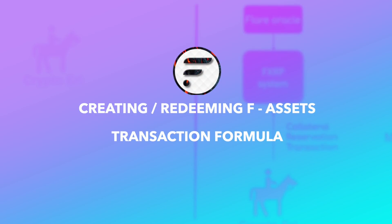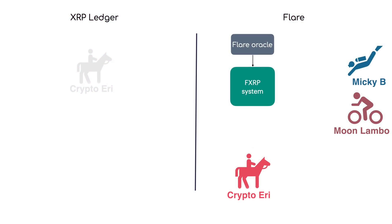Transaction formula. After completing the reservation transaction, CryptoEri will receive the transaction formula from the FXRP system. The transaction formula specifies the transaction that Eddy needs to make on the XRP ledger to create the FXRP. In addition, it will also specify a ledger index number on the XRP ledger by which point Eddy's XRP must reach the agents. If the transaction does not finalise by that ledger index, Eddy returns her XRP but loses the 0.1 Spark fee she paid to reserve the collateral.